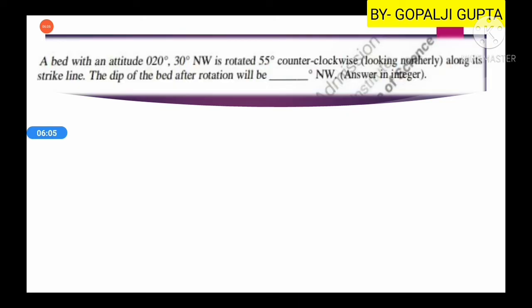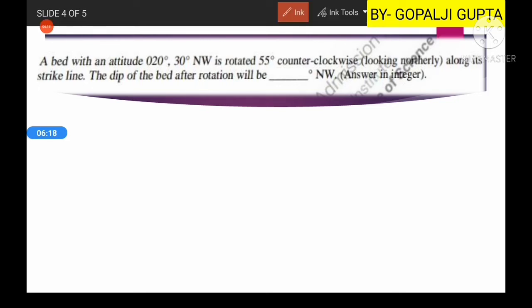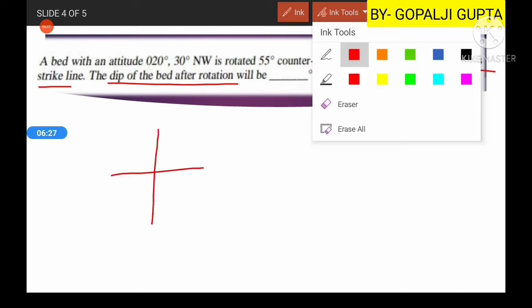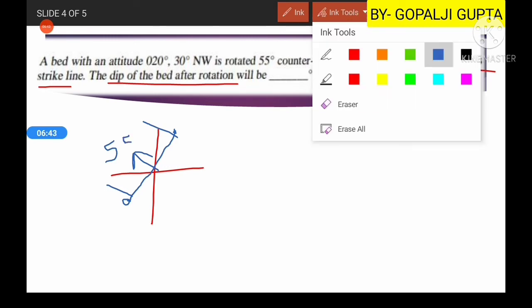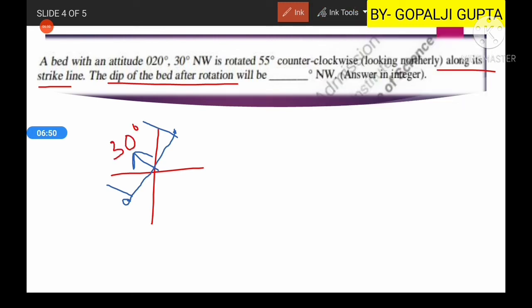Next question: a bed with attitude 0-0, 30 degree northwest is rotated 55 degree counter-clockwise while looking northerly along its strike line. What will be the dip after rotation? Let us make the plane. This is our direction, and the attitude is 0-0, which means this is the attitude of our plane, and it is dipping 30 degree in the northwestern direction.